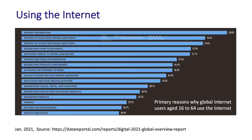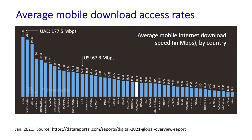I wanted to wrap up our statistics by showing you some data about access rates — specifically mobile download access rates around the world. These mobile download rates range from a high of 177 megabits per second in the UAE on downwards. Here in the United States, according to the survey, the average mobile download rate is 67 megabits per second. As you can see, the United States is far from number one as a country in terms of average internet access rates.